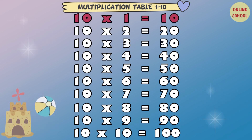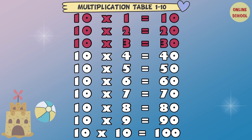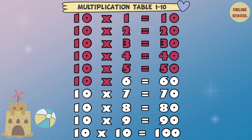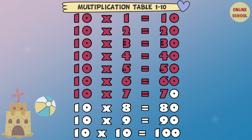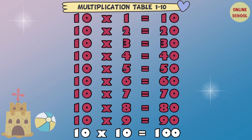10 x 1 equal 10. 10 x 2 equal 20. 10 x 3 equal 30. 10 x 4 equal 40. 10 x 5 equal 50. 10 x 6 equal 60. 10 x 7 equal 70. 10 x 8 equal 80. 10 x 9 equal 90. 10 x 10 equal 100.